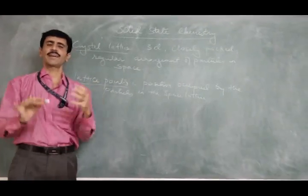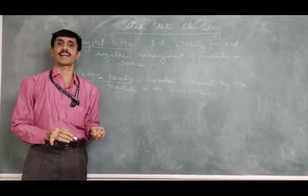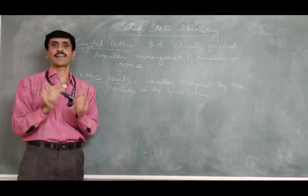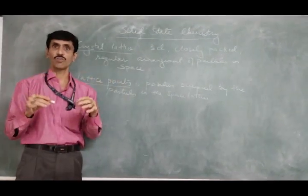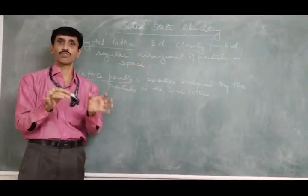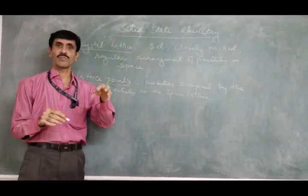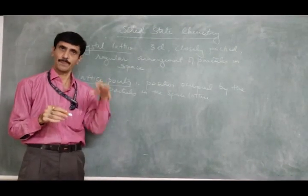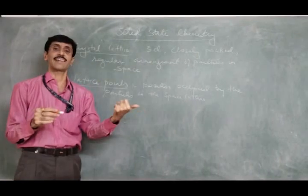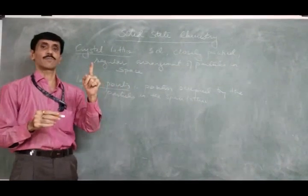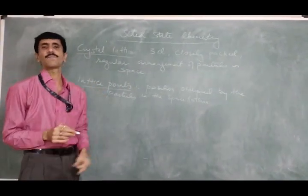For example, when the lecture is going on, the classroom can be considered as a crystal lattice. The classroom contains benches on which students are present. So the position which is occupied by the student on a bench inside the crystal lattice is basically called as lattice points.